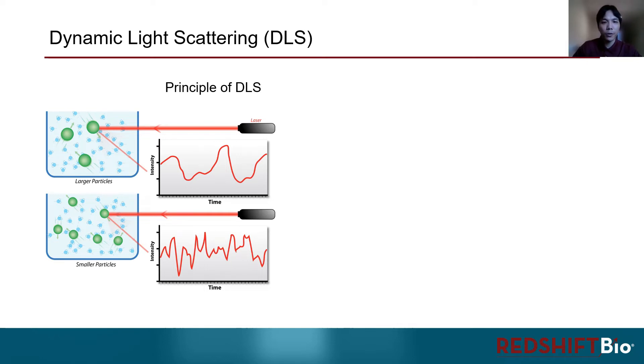As we introduced earlier, larger particles diffuse slower, and this translates to slower fluctuations of the intensity, and vice versa.